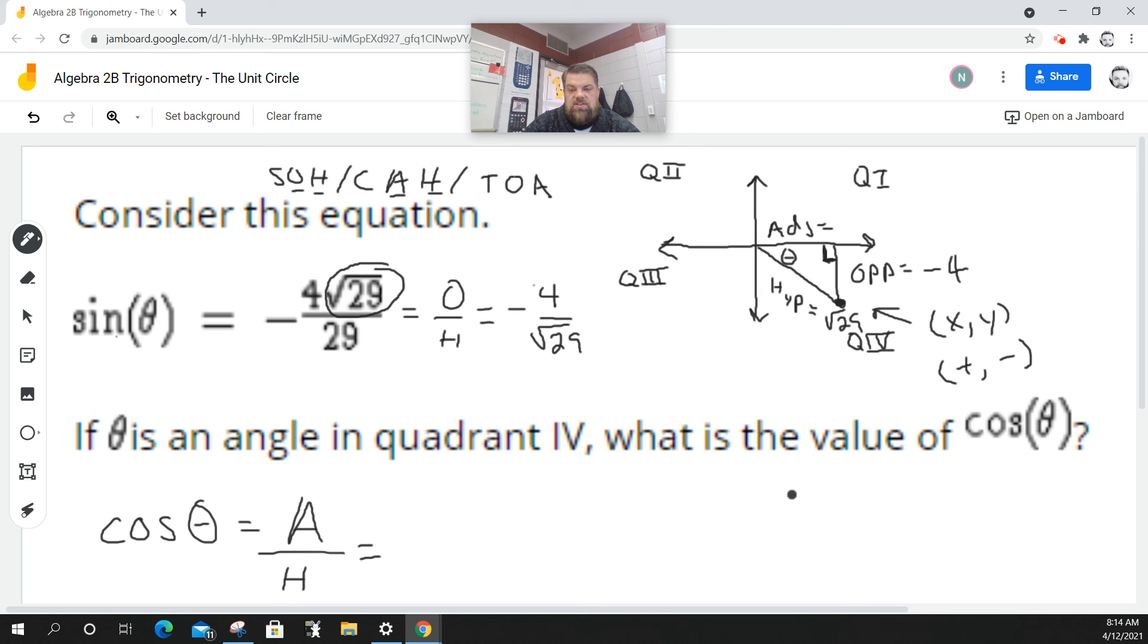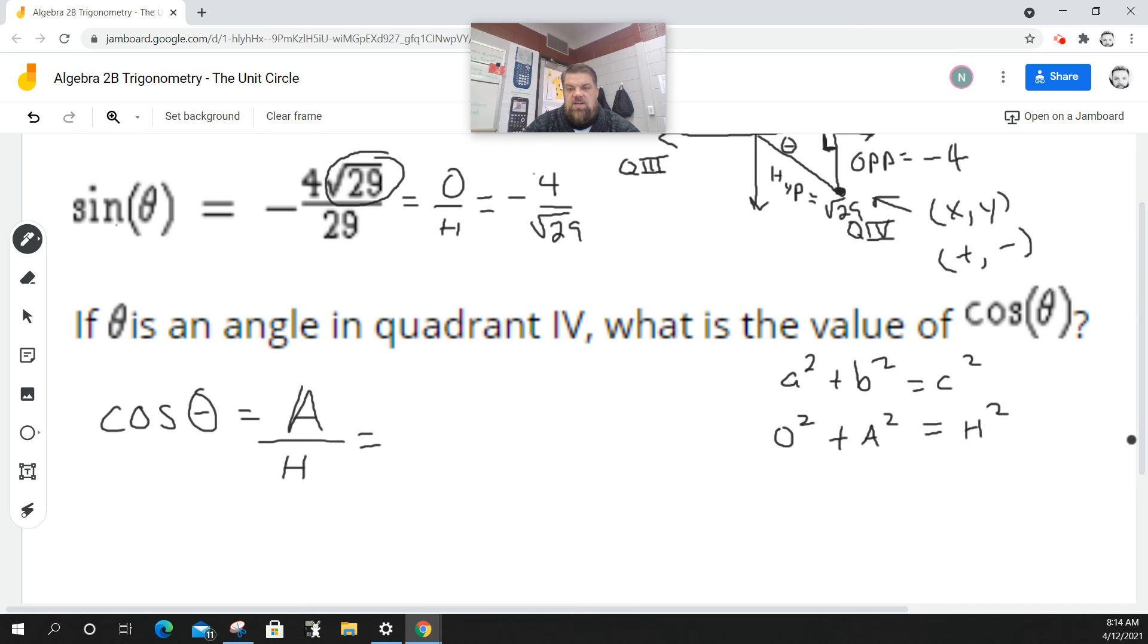So to find the adjacent, we do a variation of the Pythagorean theorem, which is a squared plus b squared equals c squared, where c squared is always the hypotenuse. Well, what would a squared and b squared be? Well, that would be the opposite plus the adjacent squared. So to find the adjacent, I just got to plug in some numbers. So this would be the square root of 29 squared. And we said that the opposite was negative 4, so that would be squared plus the adjacent squared.